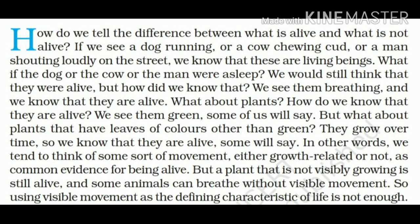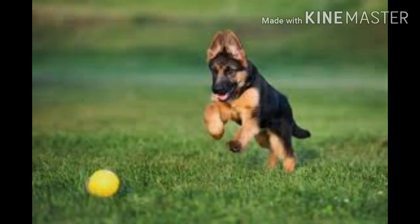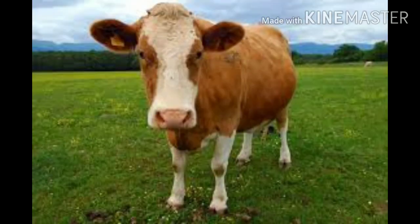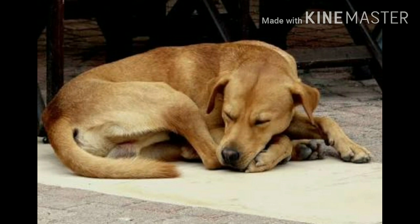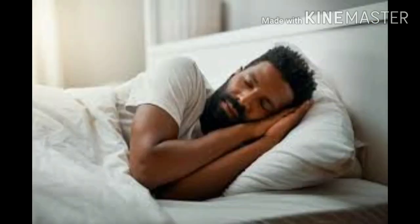How do we know that something is alive? For example, we see a dog running, a cow chewing cud, or a man shouting or walking or doing something — we know that these are living things. Now, even if you find some animal, say a dog or cow or a man asleep, you still know they are alive. You can see them breathing.